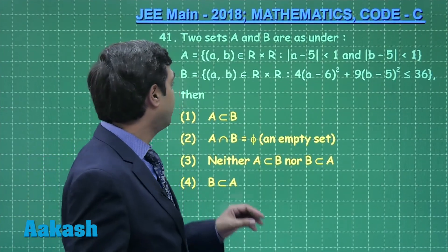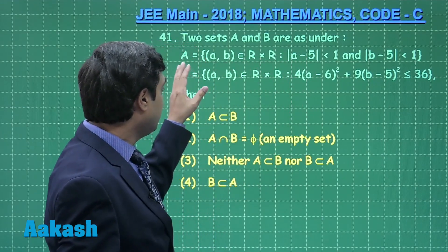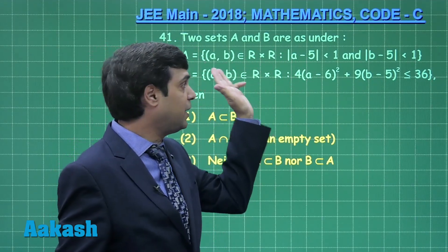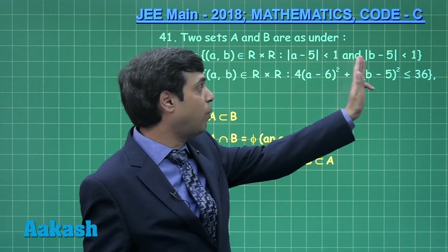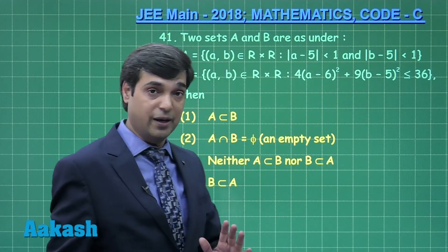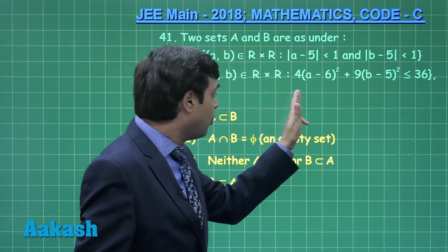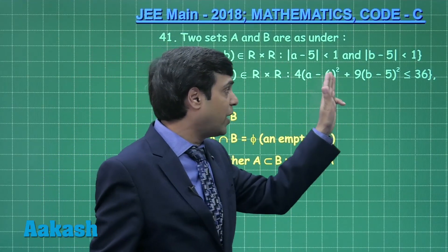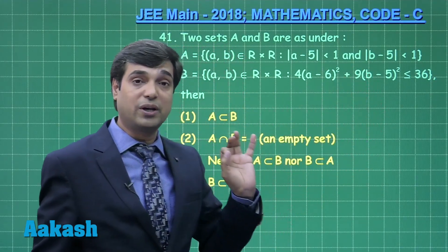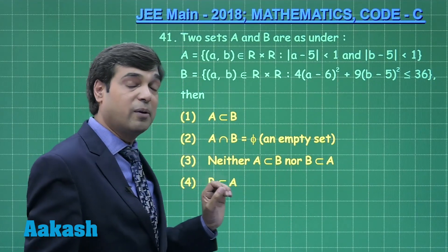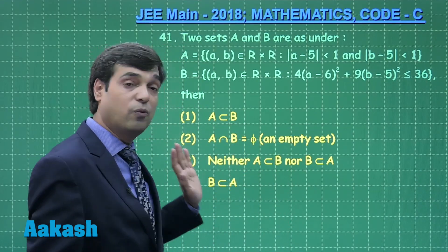Question 41: two sets A and B are defined as follows. Set A contains pairs a, b such that mod of a minus 5 is less than 1 as well as mod of b minus 5 is less than 1. Set B contains pairs such that 4 times a minus 6 whole square plus 9 times b minus 5 whole square is less than or equal to 36. We need to determine the relation between A and B.